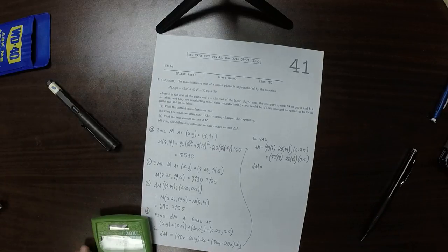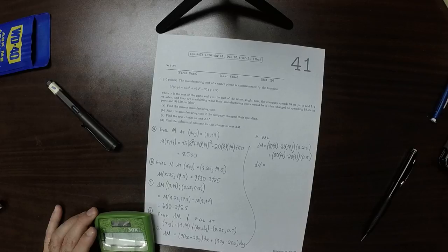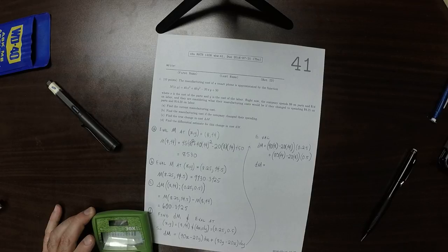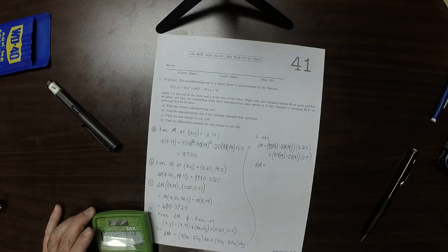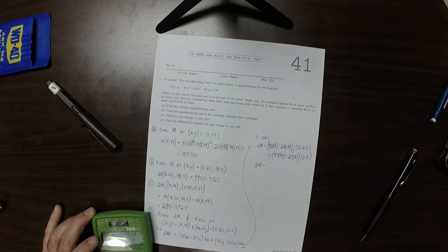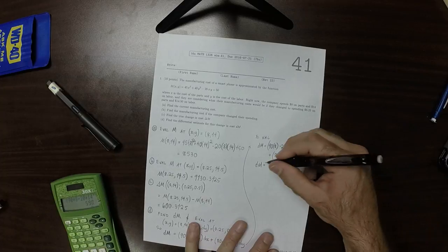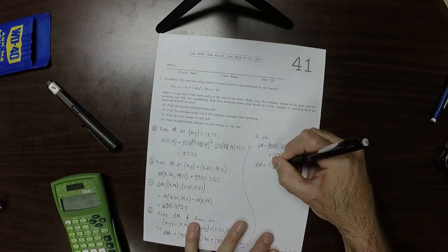So let's plug that into the machine. 90 times 8 minus 20 times 14, multiplied by a quarter, plus 80 times 14 minus 20 times 8 times a half. That's 590.